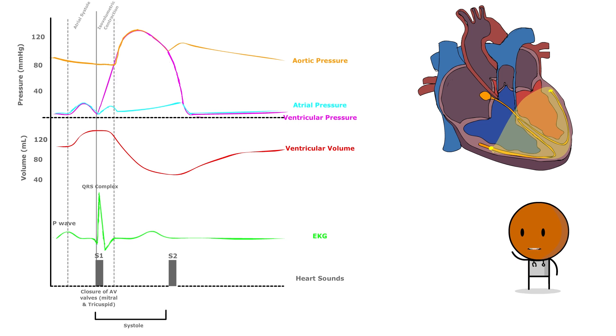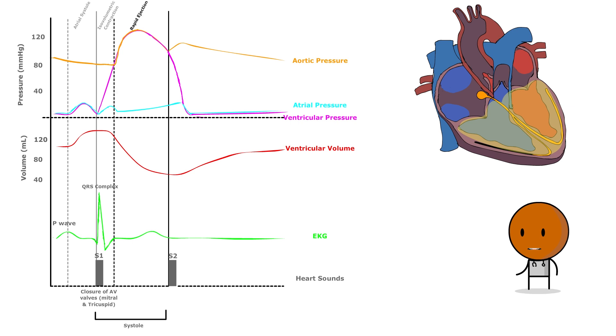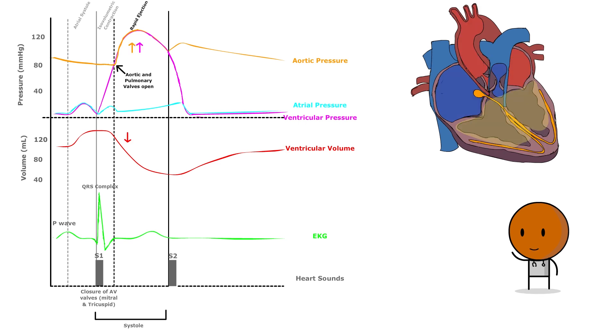The ventricles then proceed to the phase of rapid ejection, as their internal pressure surpasses those in the aorta and pulmonary artery, prompting the aortic and pulmonary valves to open, allowing blood to be propelled out.